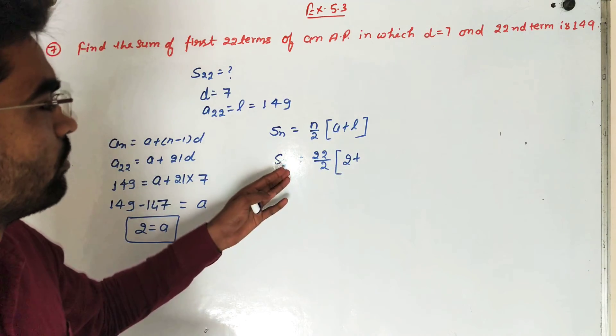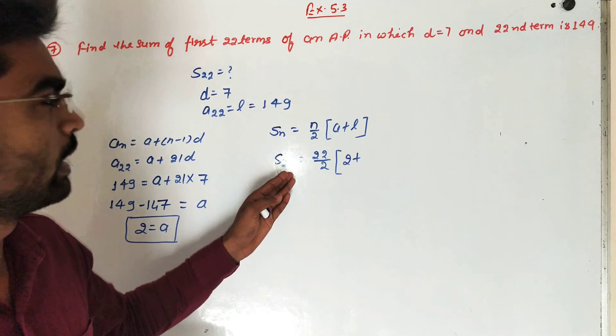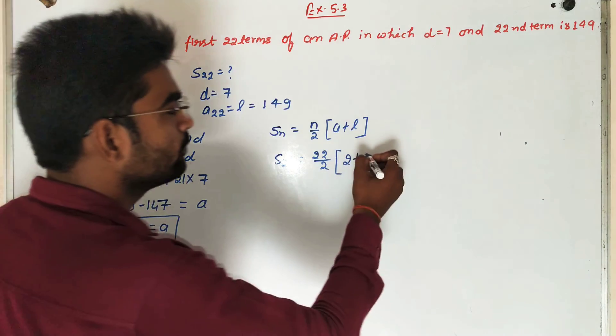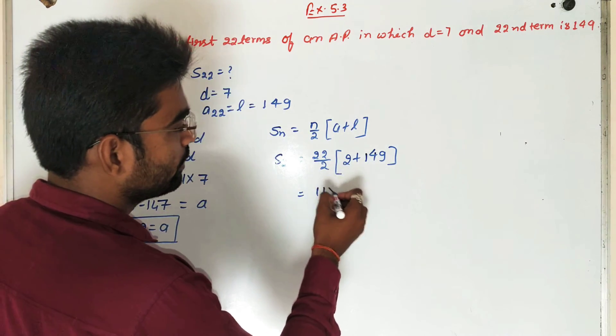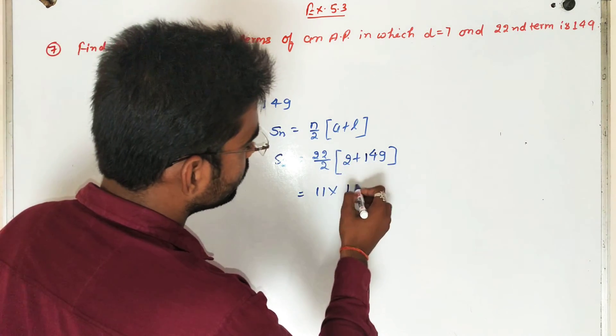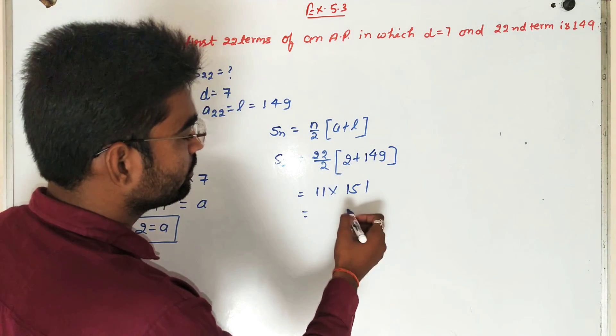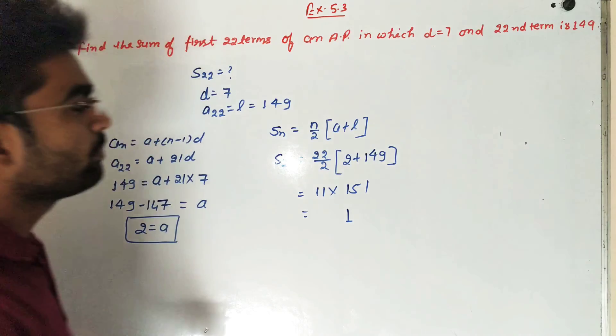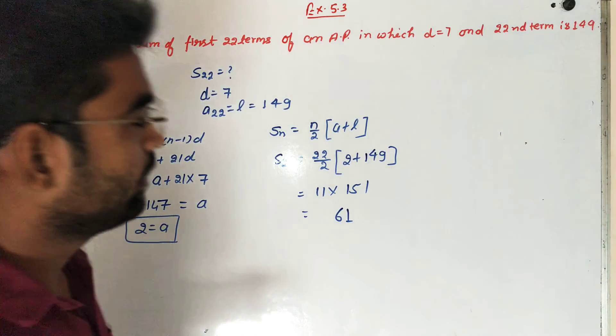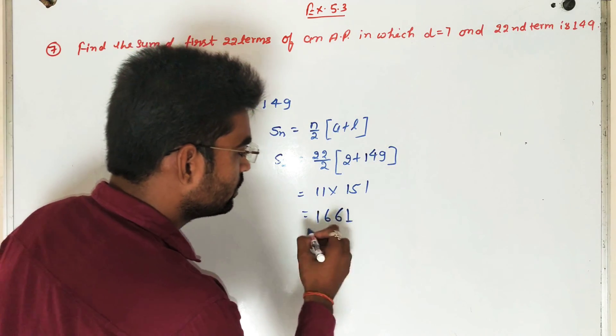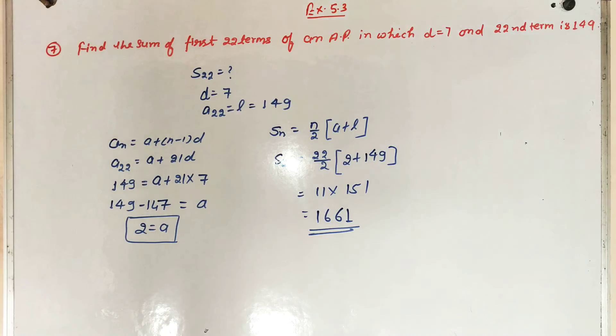This is 11 into 151. Students, multiply: 11 into 151 equals 1661. So students, it is the solution.